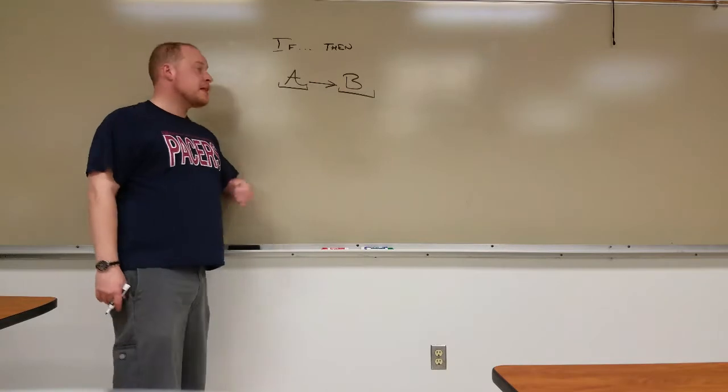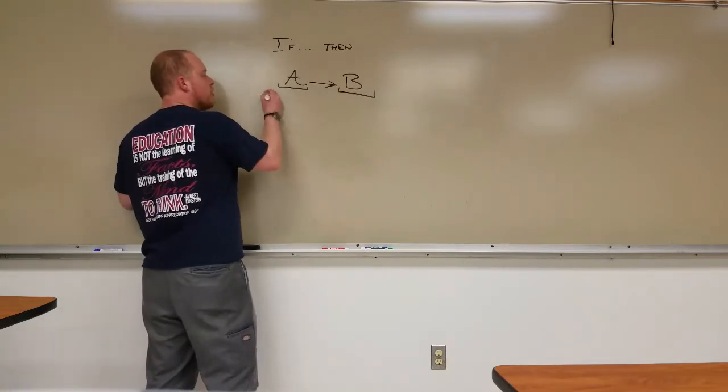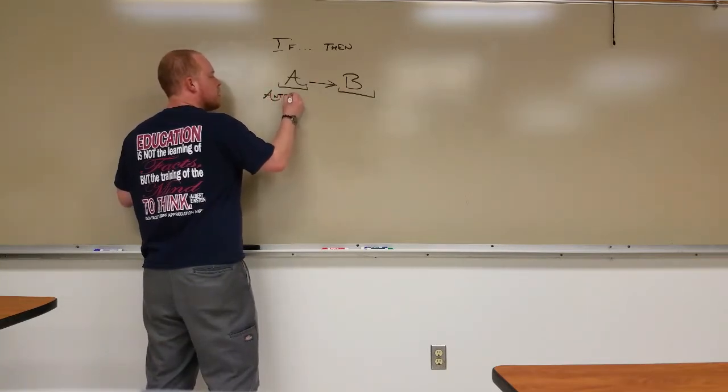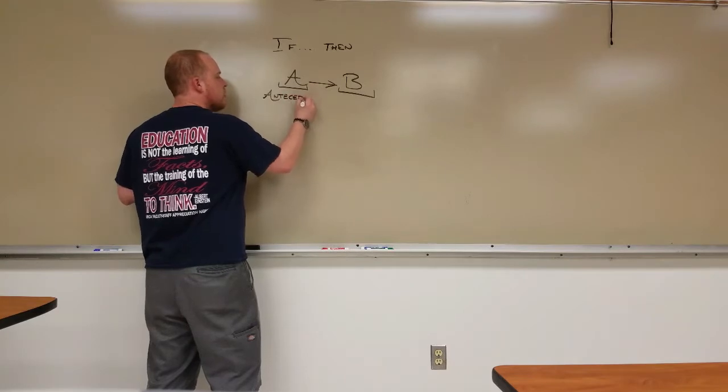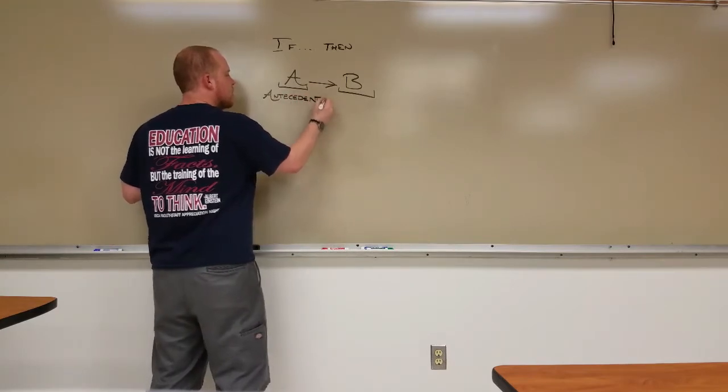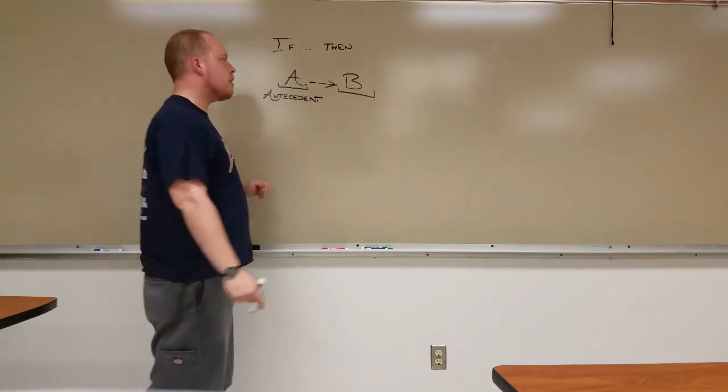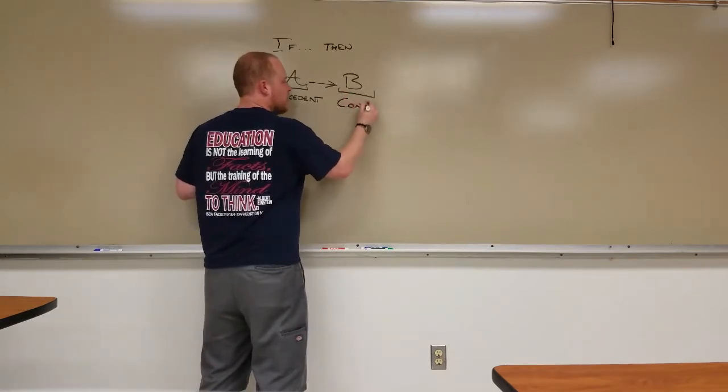Now these parts have labels. The left side, for a while here, we're going to call the antecedent. What does that mean? Literally, the thing that came before. The right side is called the consequent.